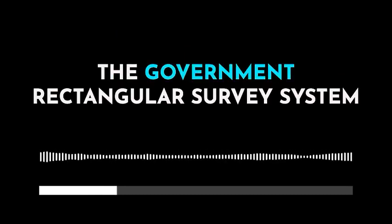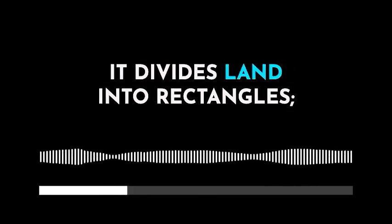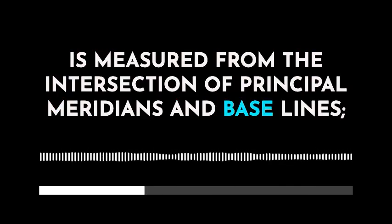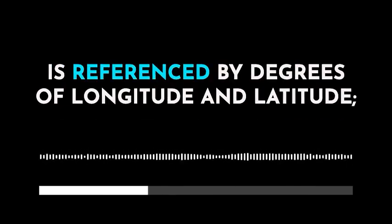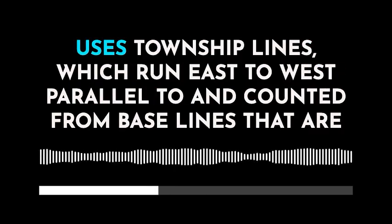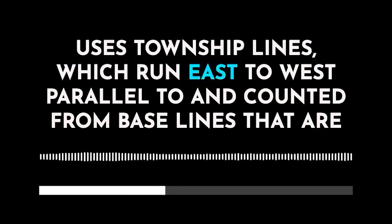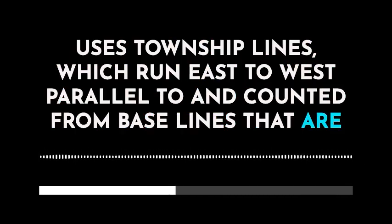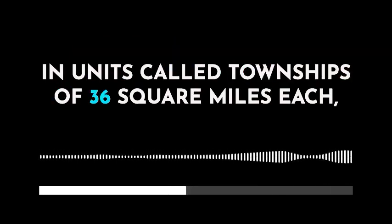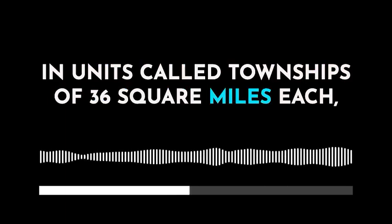2. The Government Rectangular Survey System. It divides land into rectangles, is measured from the intersection of principal meridians and baselines, is referenced by degrees of longitude and latitude, uses township lines which run east to west parallel to and counted from baselines, and are 6 miles apart, in units called townships of 36 square miles each.